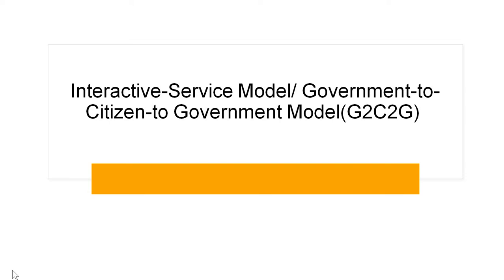Hi everyone, welcome to G-Explanation. This is the continuation of the e-governance model series, and this is the last model we are going to discuss — the fifth model, which is the Interactive Service Model, also called the Government to Citizen to Government model, or G2C2G model.